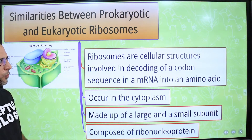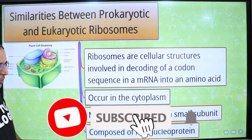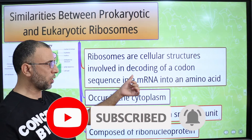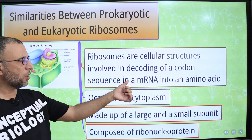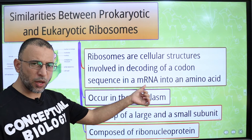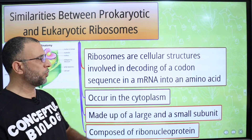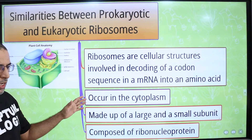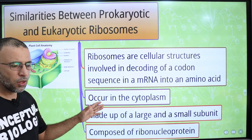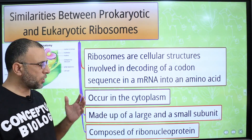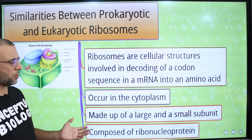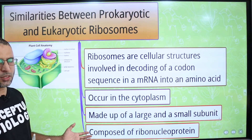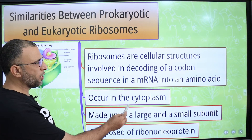Similarities between prokaryotic and eukaryotic ribosomes: both are involved in decoding the genetic information present in mRNA into a sequence of amino acids in a polypeptide chain. Both are present in the cytoplasm and are made up of small and large subunits. Both are composed of RNA and protein, and the RNA present in ribosomes is called ribosomal RNA.